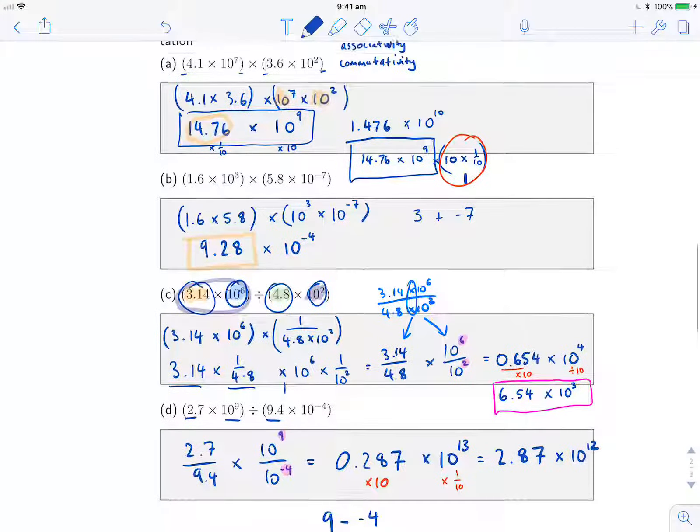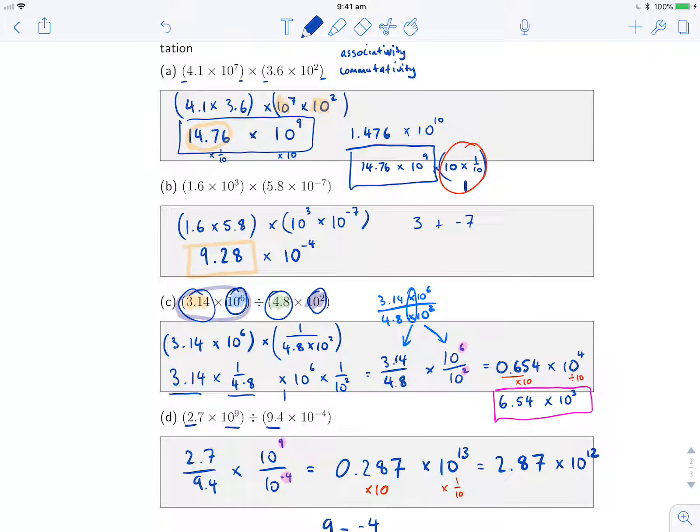Okay, so these are the scientific notation questions. Hopefully in understanding how to do these, you also have a fair idea of how to convert numbers between scientific notation and standard notation. Expanding them out and making them smaller is essentially what we're doing in these last steps here as well. Okay, good luck.